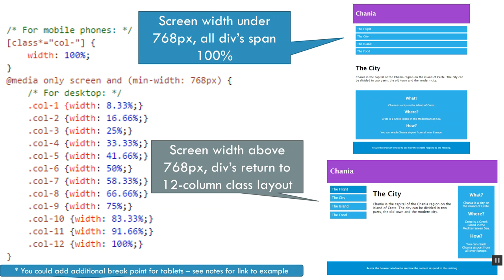Then I write a media query to detect the breakpoint where I should display more. I use @media, specify only for screens, and set the minimum width to 768 pixels — roughly the minimum resolution for a laptop or desktop screen. In that case, I switch back to my usual rules for defining a 12-column layout. When the screen resolution gets above 768 pixels, I get my full layout with the three middle items sitting next to each other.